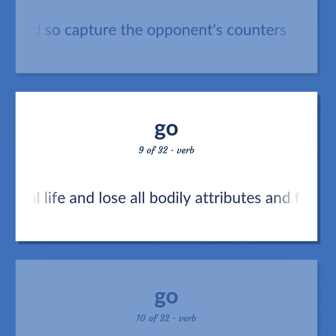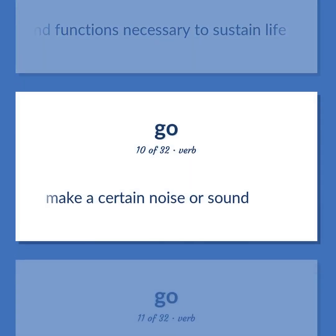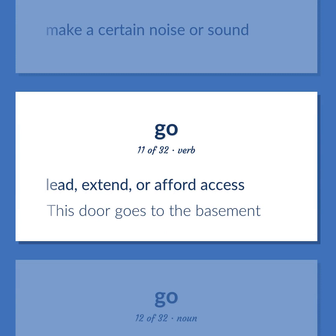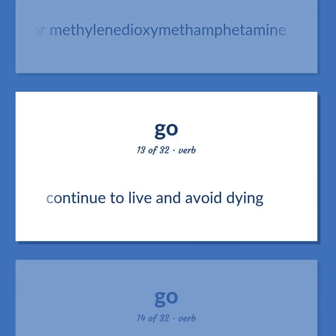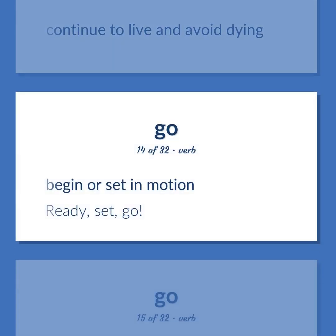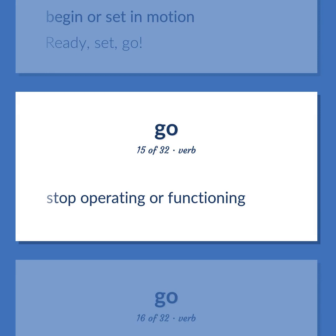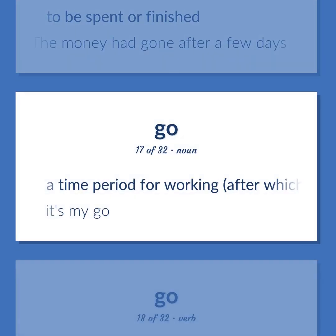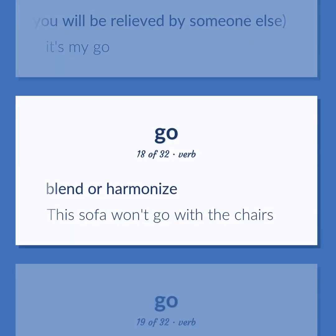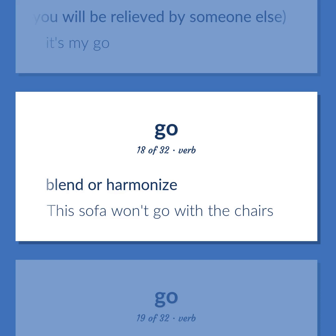Go: pass from physical life and lose all bodily attributes and functions necessary to sustain life. Make a certain noise or sound. Lead, extend, or afford access — this door goes to the basement. Street names for methylenedioxymethamphetamine. Continue to live and avoid dying. Begin or set in motion — ready, set, go. Stop operating or functioning. To be spent or finished — the money had gone after a few days. A time period for working, after which you will be relieved by someone else — it's my go. Blend or harmonize — this sofa won't go with the chairs.